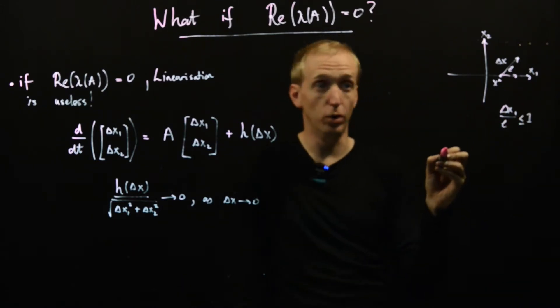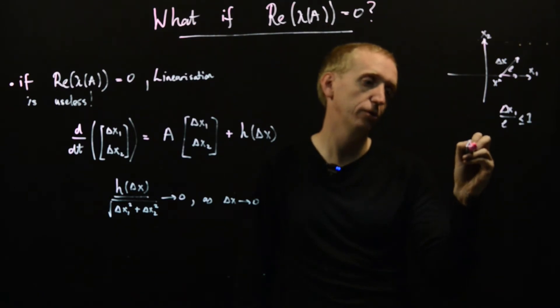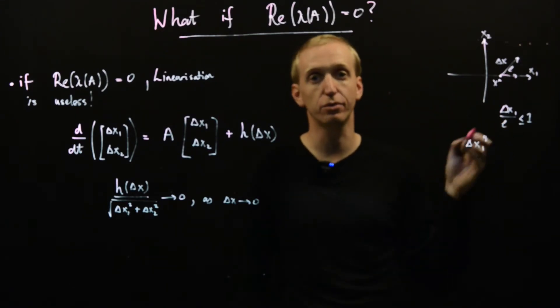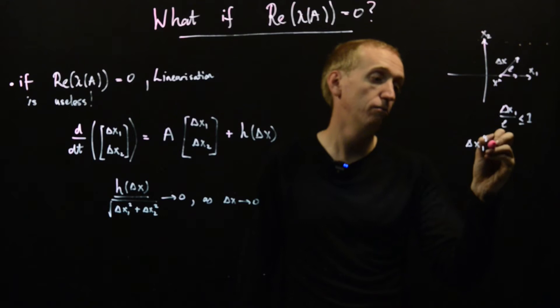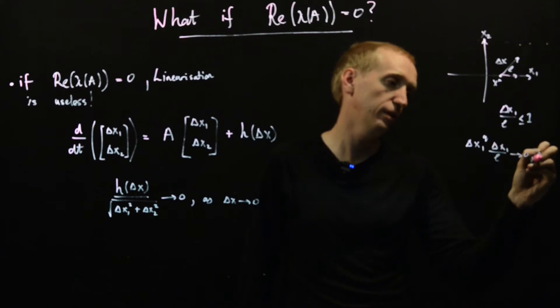And so what this implies is that delta x1 to whatever power we want, say q, this could be like 1, 2, 3, doesn't matter, multiplied by delta x1 over L will go to zero as delta x goes to zero.